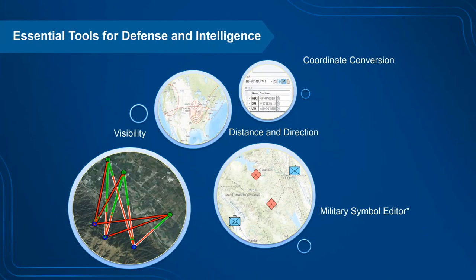Military Tools consist of four key components: coordinate conversion for converting a variety of coordinate notation formats; distance and direction for drawing graphics such as range rings, ellipses, circles, and lines; the visibility tool where you bring your own elevation data to conduct linear and radial line of sight; and the Military Symbol Editor, where you can create and curate military standard symbols in ArcGIS Pro.